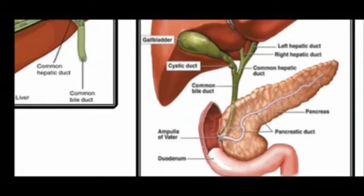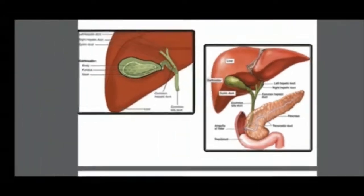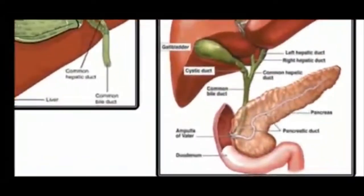The common bile duct and the pancreatic duct open into the duodenum through the ampulla of Vater. These ducts are very important because the management of cholelithiasis depends on the position of the stones — whether the stones are present in the gallbladder, the cystic duct, or the common bile duct, the management will differ accordingly.